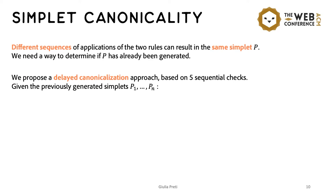However, since also finding the canonical form of a new simplet is not easy, we propose to use delayed canonicalization procedure so that we don't find the canonical form of a candidate new simplet until we actually need them.